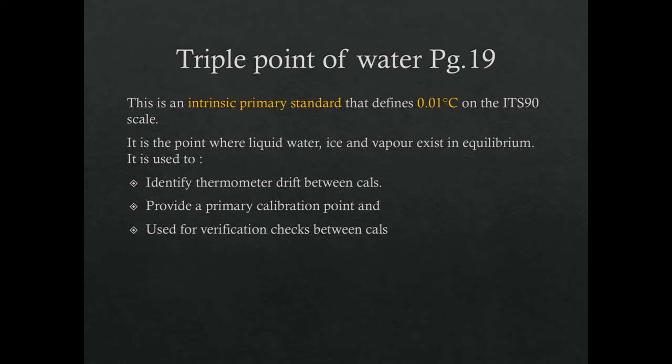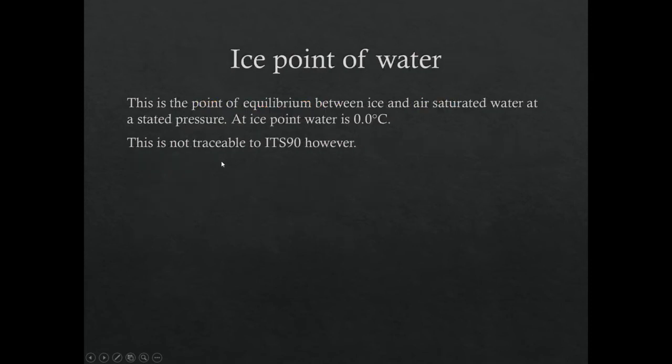The triple point of water is, by definition, the point where liquid water, ice, and vapor exist at equilibrium. We use it to identify thermometer drift between calibrations, provide a primary calibration point, and for verification checks between calibrations. Students have done labs like this — a temperature transmitter calibration using an ice bath — which is essentially creating this intrinsic standard by stirring ice into water.